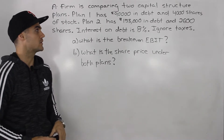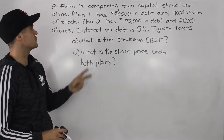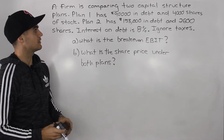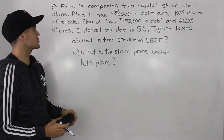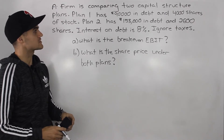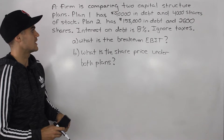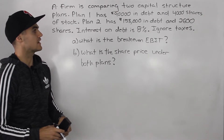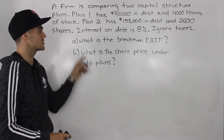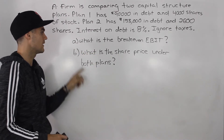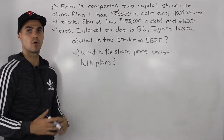So let's see what we're dealing with here in this question. We have a firm comparing two capital structure plans. Plan one has $90,000 in debt and 4,000 shares of stock. Plan two has $153,000 in debt and 2,600 shares. Interest on debt is 8%. We are ignoring taxes. There are two parts to this question: what is the break-even EBIT, and part B, what is the share price under both plans?